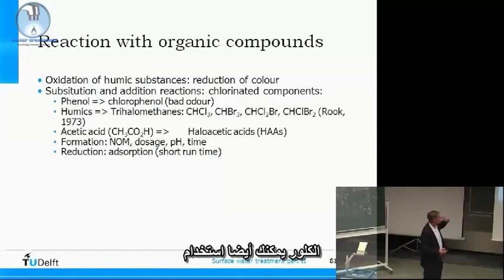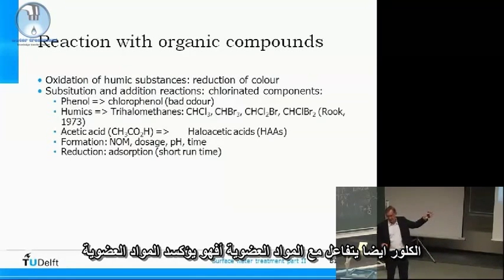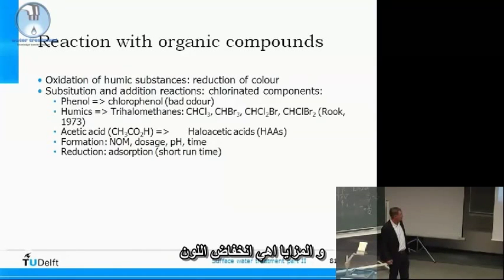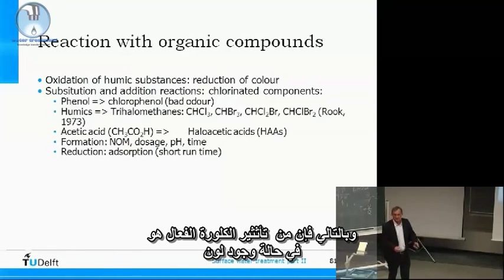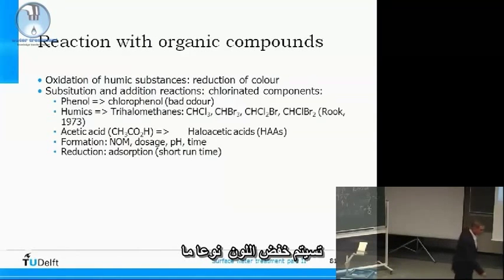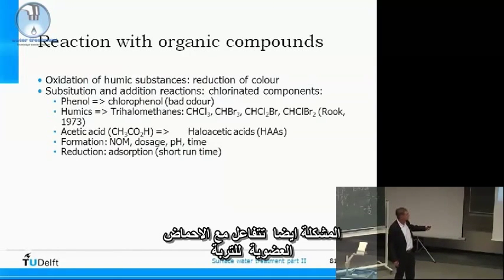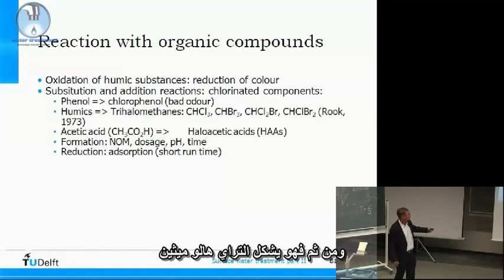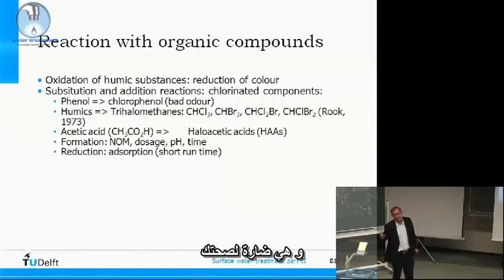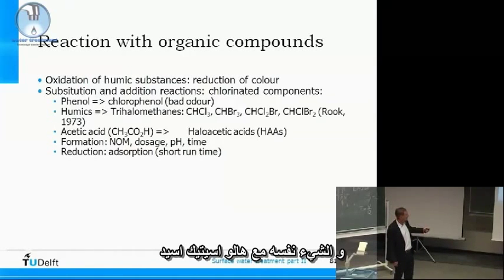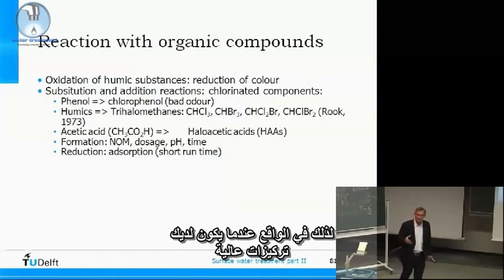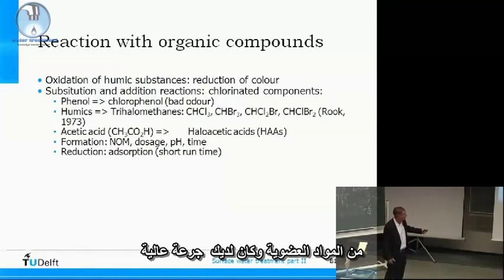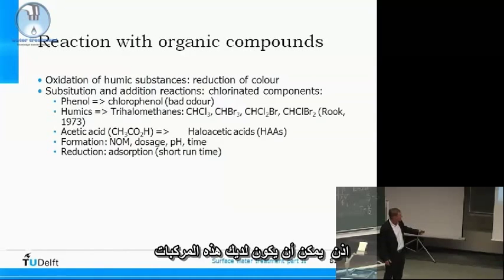Chlorine can also react with organic matter — it oxidizes it. The advantage is that color is reduced, so when you have high color, it is slightly reduced after chlorination. But the problem is that chlorine reacts with humic acids and forms trihalomethanes, which are bad for health. The same applies to haloacetic acids. When you have high concentrations of organic matter and high dosages, this formation can occur.